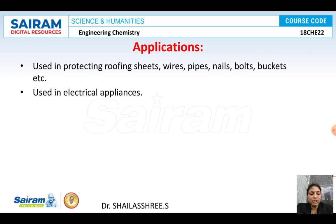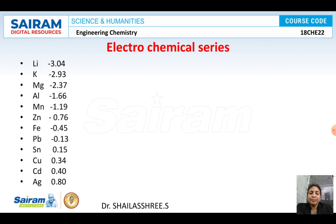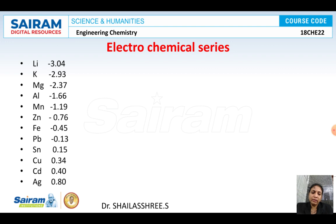The applications of galvanized metals: it is used in industries for protecting roofing sheets, wires, pipes, nails, bolts, pockets, etc. It is also used in electrical appliances, for industrial purposes, and for some domestic purposes. Remember the metals present above iron in the electrochemical series — coating with those gives anodic metal coating. Coating iron with any metals present below it in the electrochemical series is called cathodic metal coating. In our syllabus, we have anodic metal coating, so we discussed the galvanization process.